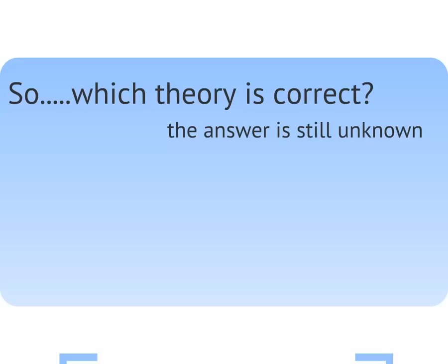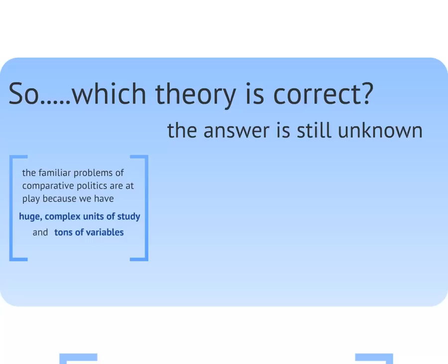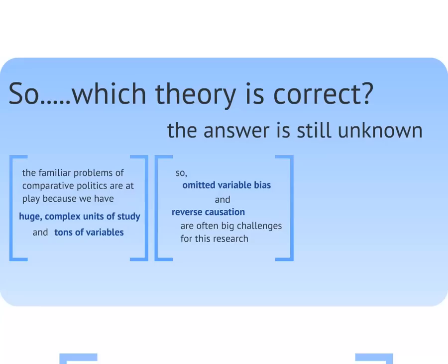So which theory is correct? We don't have the answer to that one yet, unfortunately, and this is because of some familiar old problems of comparative politics. We've got huge, complex units — states — that we're trying to study, and there are tons of variables, everything from literacy rates to GDP to public opinion to the desires of individual leaders. Like with other huge outcomes in comparative politics, democratization is incredibly complex, so no one theory is likely to capture it. Therefore, we're again open to our old friends omitted variable bias and reverse causation. With so many potential variables, it is really hard for any one study to include every pertinent variable and avoid omitted variable bias. Moreover, lots of the correlates of democracy might be caused by democracy instead of causing democracy themselves — this reverse causation is a common accusation against the modernization hypothesis.